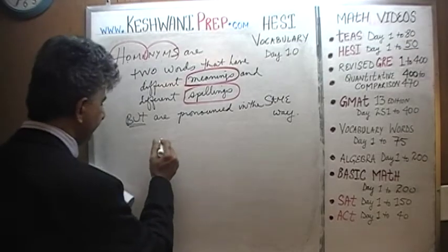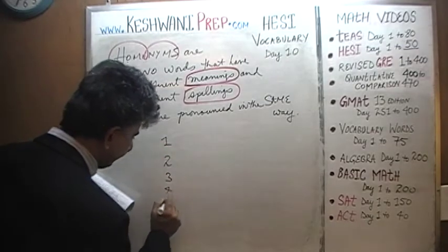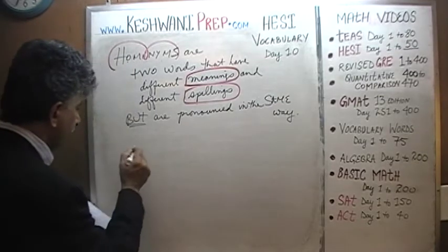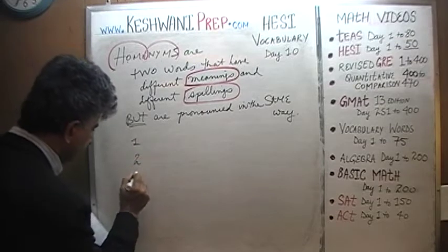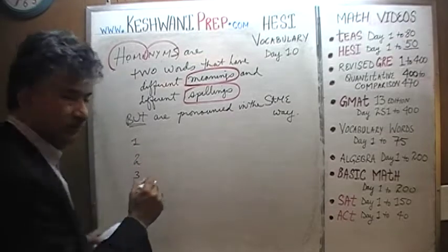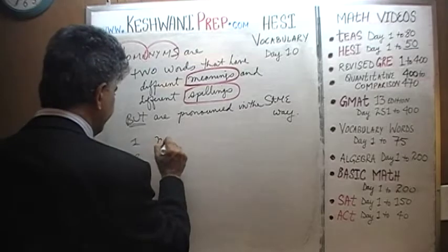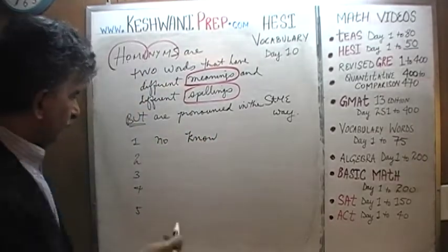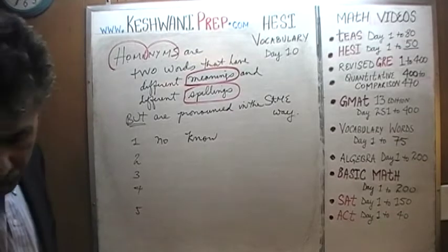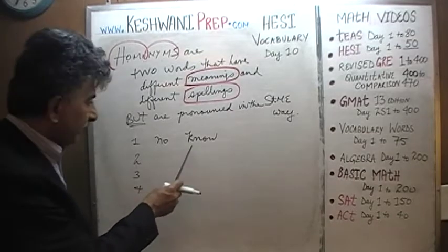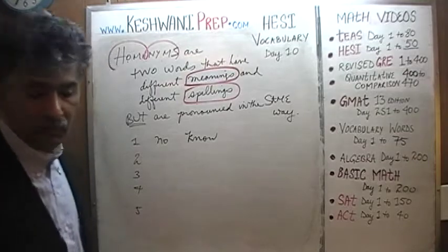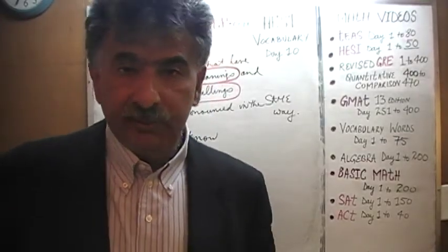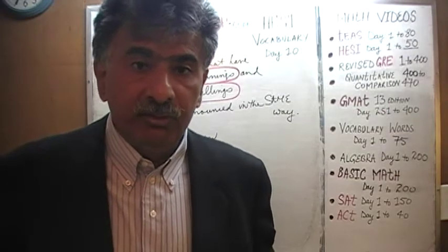Let's start with something very simple — how about 'no' and 'know'? As you can see, obviously these two words have different meanings. 'No' and K-N-O-W, 'know' — as in to know something. They have different meanings, they have different spellings, but they are pronounced the same way: 'no.'